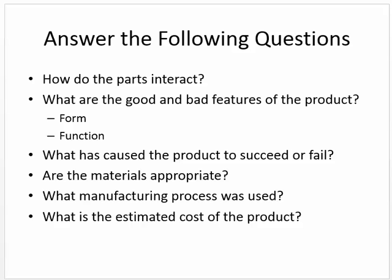Answer the following questions: how do the parts interact? What are the good and bad features of the product? These are the questions we want to be able to answer when we're done with our structural analysis of our Automoblox. We want to say: what has caused the product to succeed or fail? Are the materials appropriate — maybe we need to change one, perhaps it shouldn't be made of wood. What manufacturing process was used? What is the estimated cost? These are all things we'd want to find during a structural analysis. I hope you found that informational today — I'll catch you on the flip side. Bye.